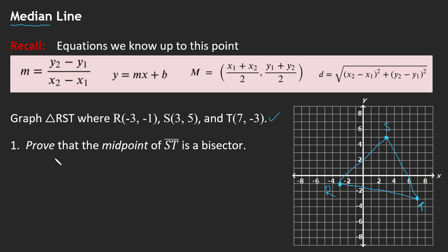Now let's prove that the midpoint of ST, which will be roughly here, is a bisector. Now what is a bisector? Bisector means it cuts the line ST into two equal parts, two that are the same length. Hint, hint, nudge, nudge, distance equation.